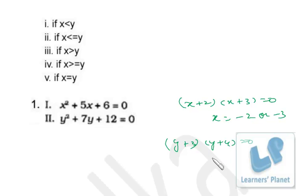Similarly, from here (y + 3)(y + 4) = 0. So y is equal to -3 or -4. So if you have to compare between x and y, what is happening over here?